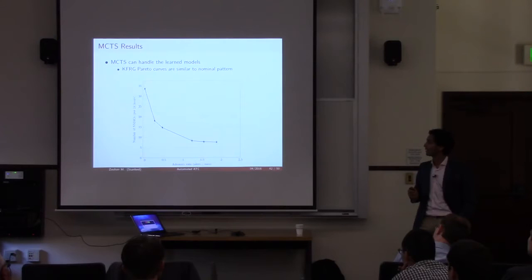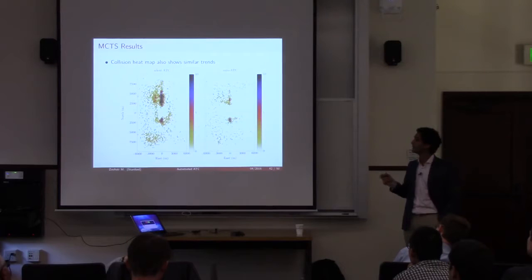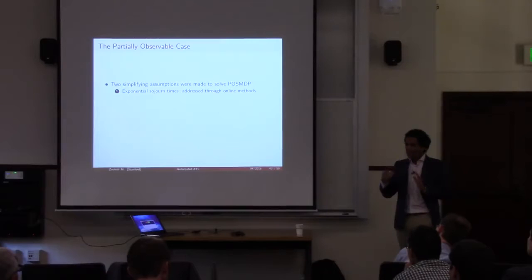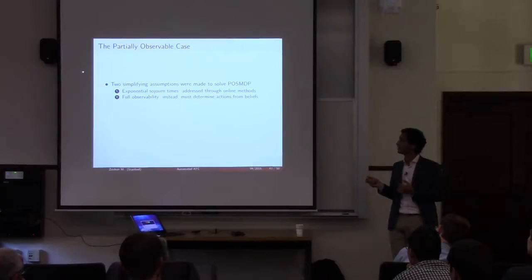To show how collisions occur: the runway is here, aircraft are coming in on final. Without our advisories, a lot of the collisions occur in the final. As we start issuing advisories, a lot of that goes away and the majority of them happen in the upwind. To summarize where we are: we made two simplifying assumptions to solve the POSMDP — one was exponential sojourn times, which we addressed using online methods; the other was full observability. Now we need to think about how to come up with optimal actions directly from beliefs, meaning from estimating these hidden states.